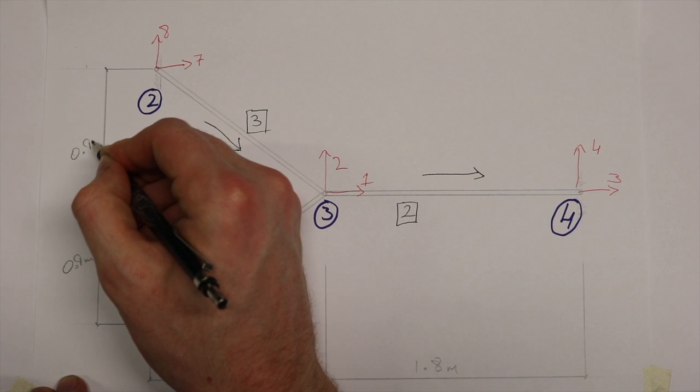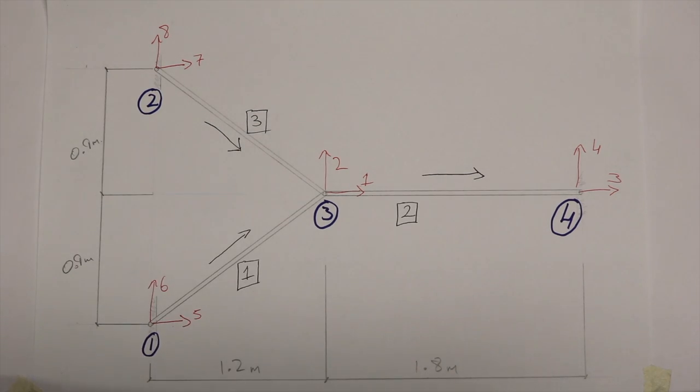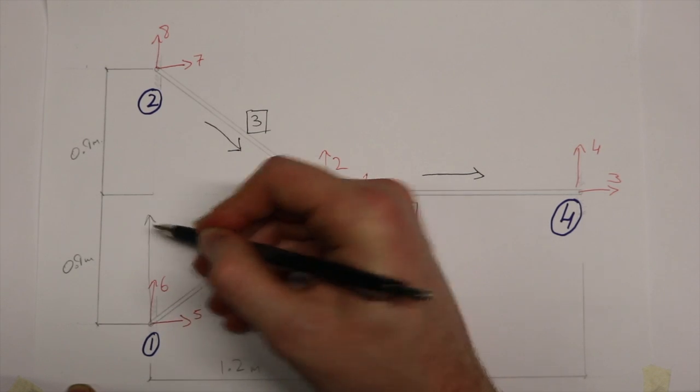The dimensions of this truss are as follows and they will become important when performing calculations to create each member stiffness matrix. In order to maintain all joint coordinates positive, the origin of global coordinates is chosen to be at node 1 with the x-axis spanning right and the y-axis reaching upwards.